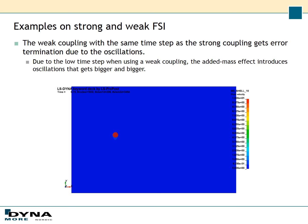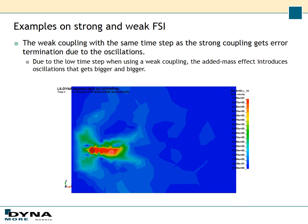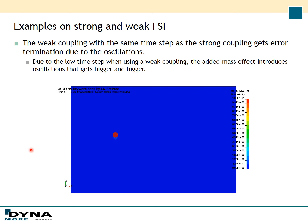Here is the result from the weak coupling case that uses the same time step as the strong coupling. As you can see, the oscillations start even before the velocity is applied, and they get bigger and bigger, leading the simulation to end with error termination due to the high oscillations of the structural part.